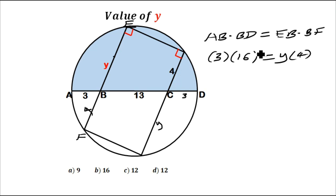So how do we get y? To get y, we simply divide both sides of the equation by 4. So 4 cancels with 4. 4 goes into 16 four times. You have y equals 3 times 4, which is 12.